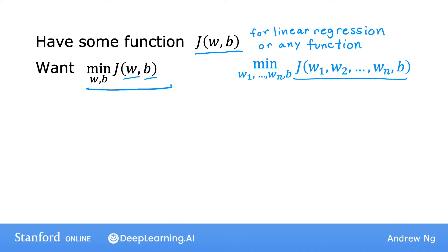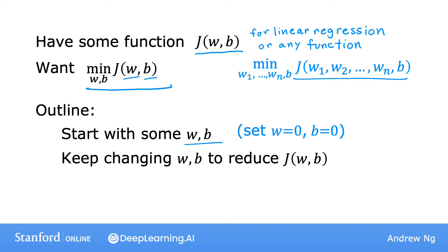What you're going to do is just start off with some initial guesses for w and b. In linear regression, it won't matter too much what the initial values are, so a common choice is to set them both to zero. With the gradient descent algorithm, what you're going to do is you'll keep on changing the parameters w and b a bit every time to try to reduce the cost J(w,b) until hopefully J settles at or near a minimum.